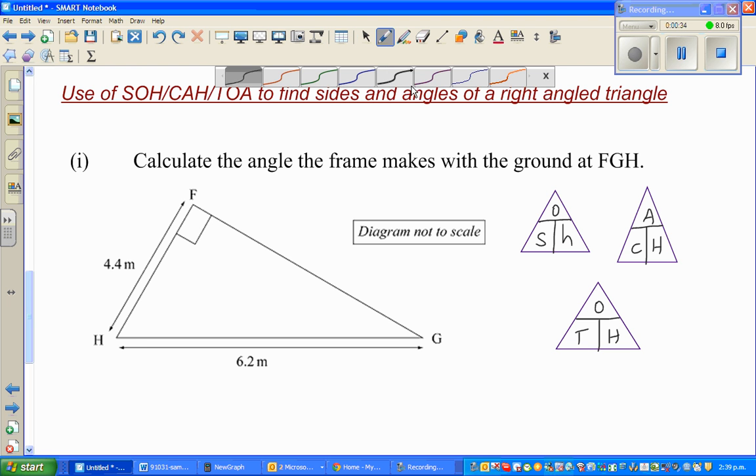To use this formula or the mnemonic, the first thing that you need to do is decide the angles and the sides. Let's read the question: Calculate the angle the frame makes with the ground at FGH. In simple language, they're asking you to find this angle, angle FGH. Based on this angle, you can clearly say this is the hypotenuse, the longest side, the side opposite to the right angle.